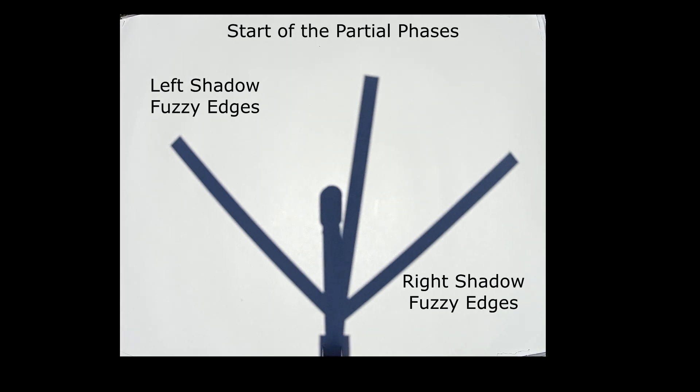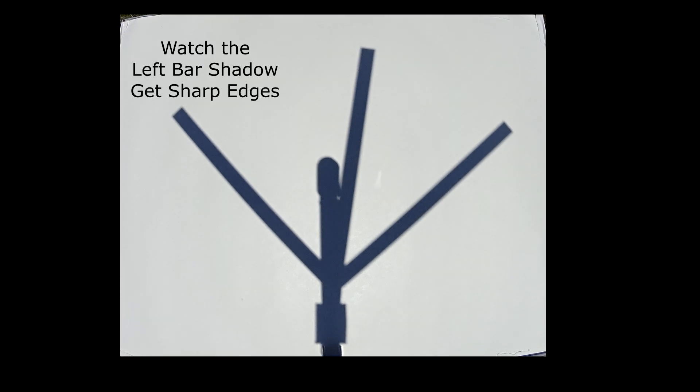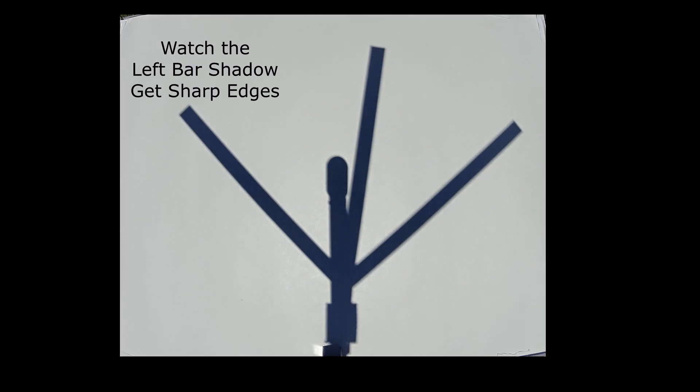Here's what happens when the Sun's a big globe of light. Both bars make fuzzy edges because the Sun's an extended source of light.